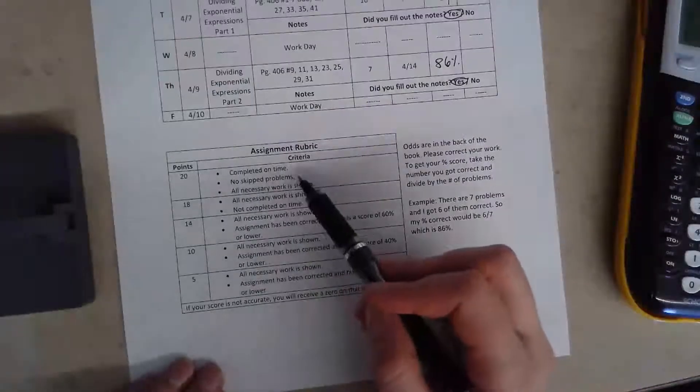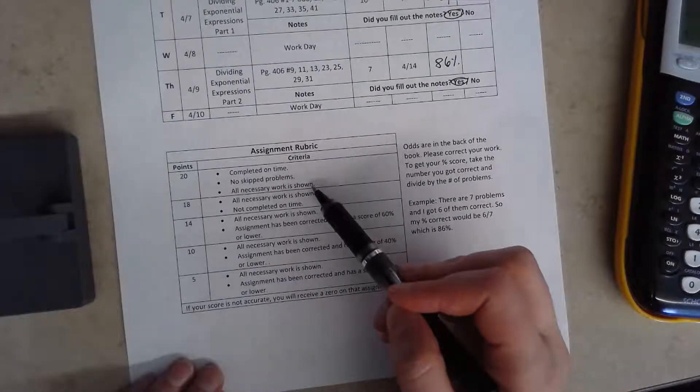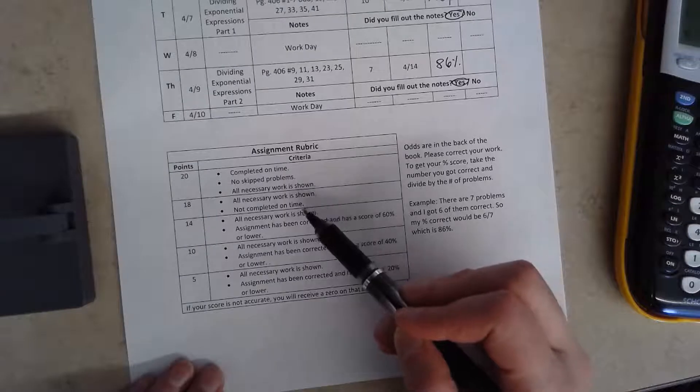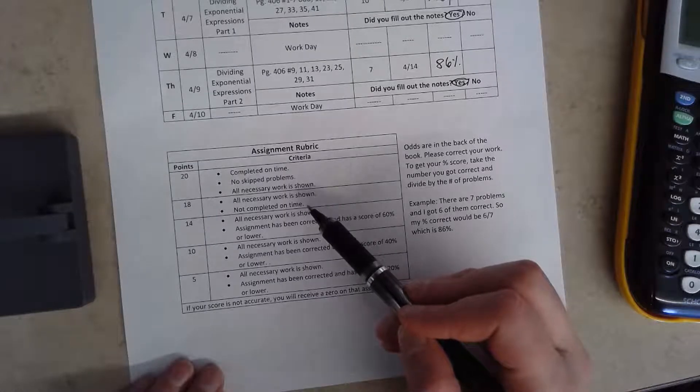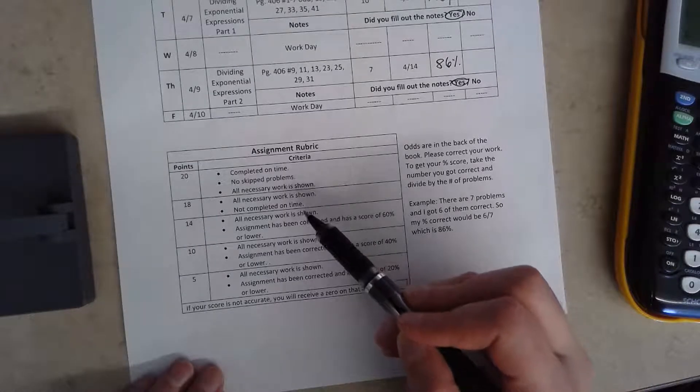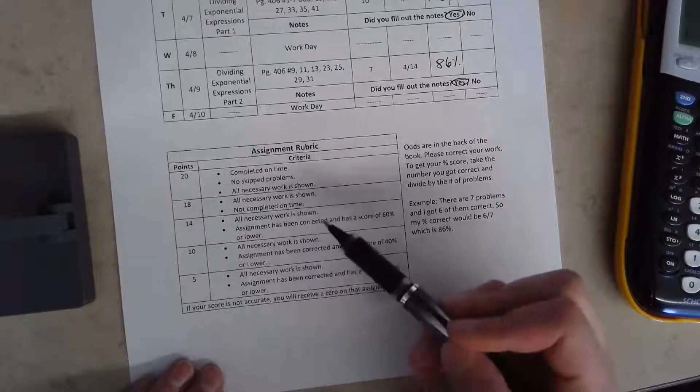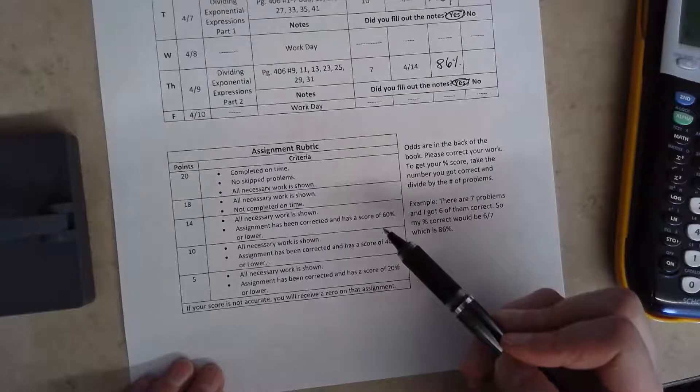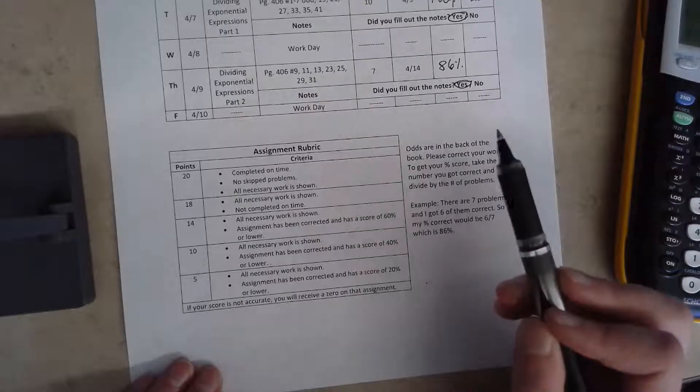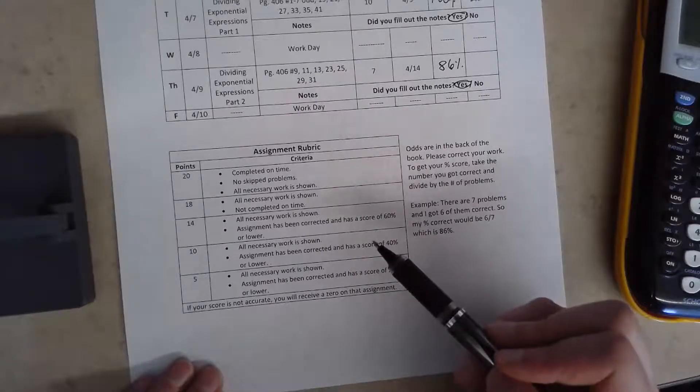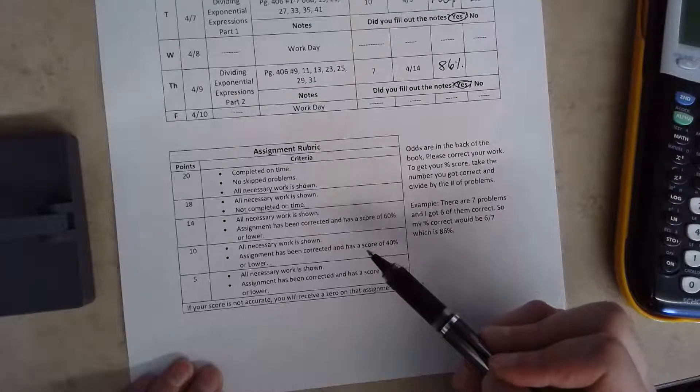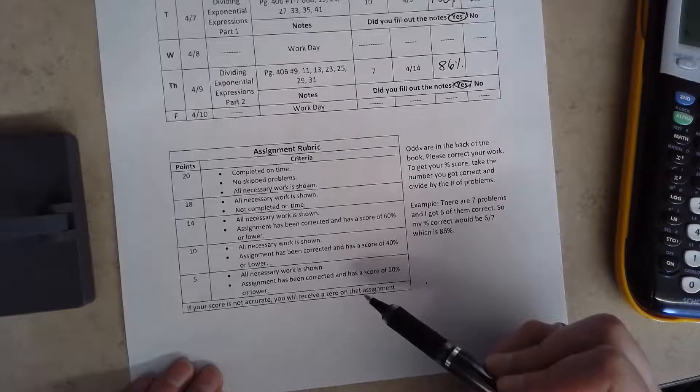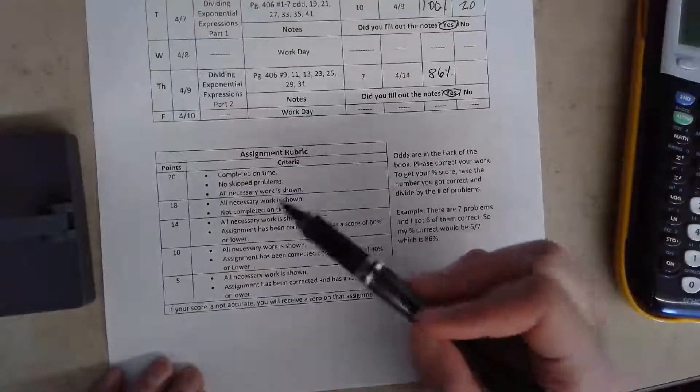Okay, so complete on time, no skipped problems, all necessary work shown: twenty points. Let's say all necessary work is shown but it's not completed on time, so I'm going to get eighteen points. If I didn't complete it on time, all necessary work is shown, assignment has been corrected and has a score of sixty percent or lower, I just really struggled with this one, I'd put fourteen points. All necessary work is shown, assignment has been corrected and has a score of forty percent or lower, and so forth. Use this as your rubric.